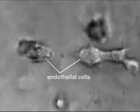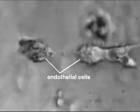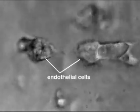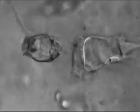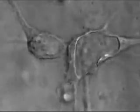In culture, endothelial cells behave in a similar way. They spontaneously develop internal vacuoles that join up from cell to cell, creating a single lumen shared by many cells.